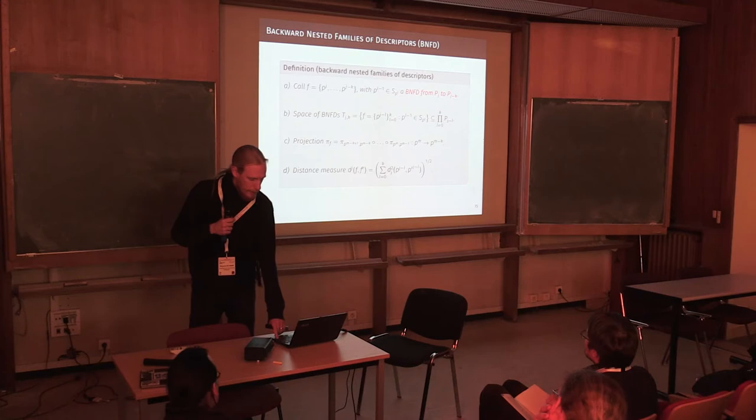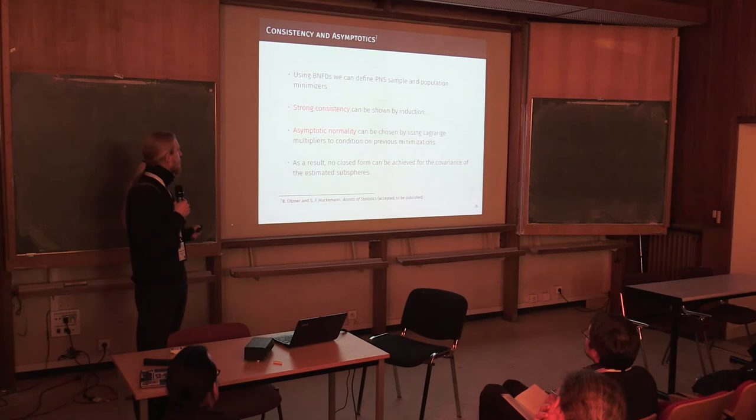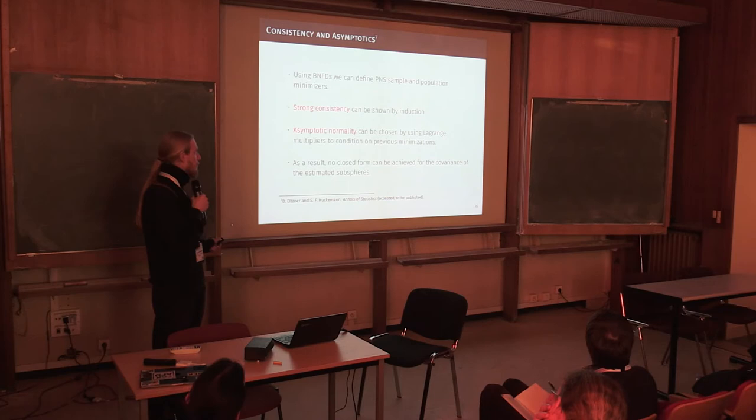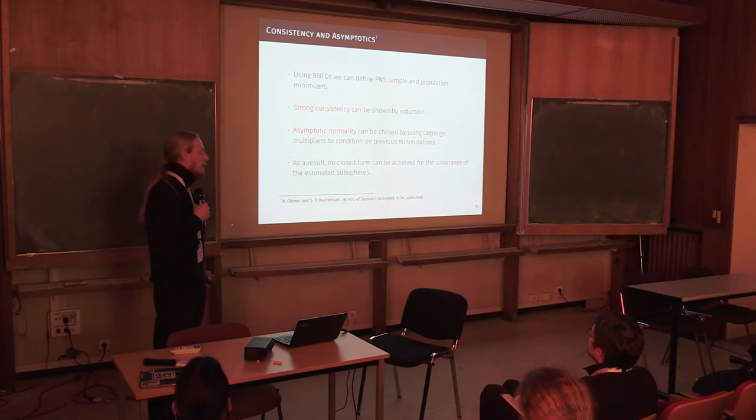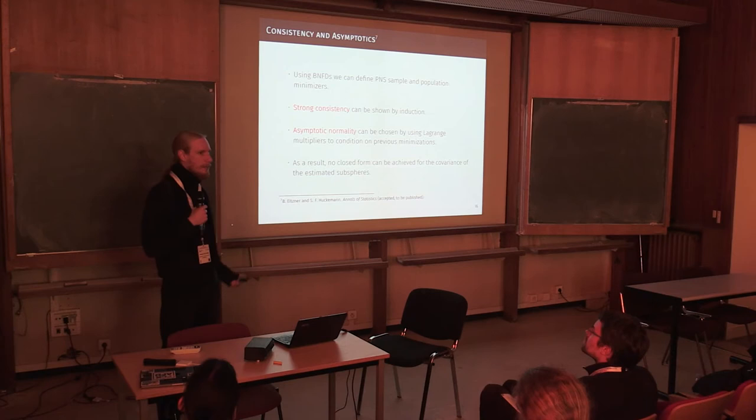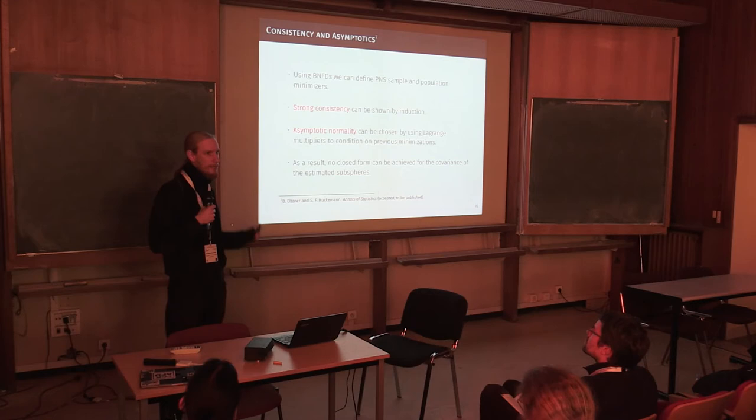And I cannot go into detail with the asymptotic theory already over time. But suffice it to say, we can define sample and population minimizers. We can show strong consistency, and we can show asymptotic normality using these Lagrange multipliers. But due to this very complicated formulation with the Lagrange multipliers, it's virtually impossible to give a closed form for the covariance, even in the simple case of principle nested spheres.